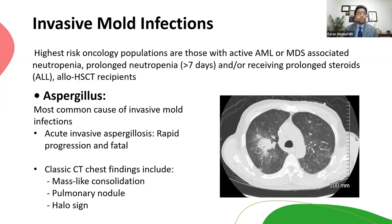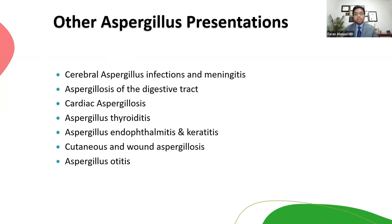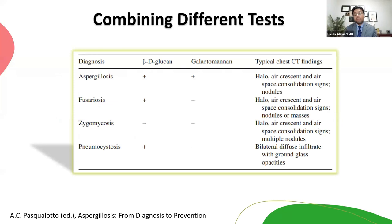Invasive mold disease particularly shows up in high-risk hosts who develop respiratory failure — those with active AML or MDS and profound neutropenia. These patients develop a nodular lesion on CT scan called the halo sign, which is a mass-like consolidation of damaged lung tissue. Aspergillus can also involve other organs: the brain, digestive tract, cardiac tissue, thyroid, and skin. Diagnostics are limited — beta-D-glucan and galactomannan may be positive for Aspergillus, but in Fusariosis, Zygomycosis, and Pneumocystis, galactomannan may be negative, so you cannot rely on it alone.